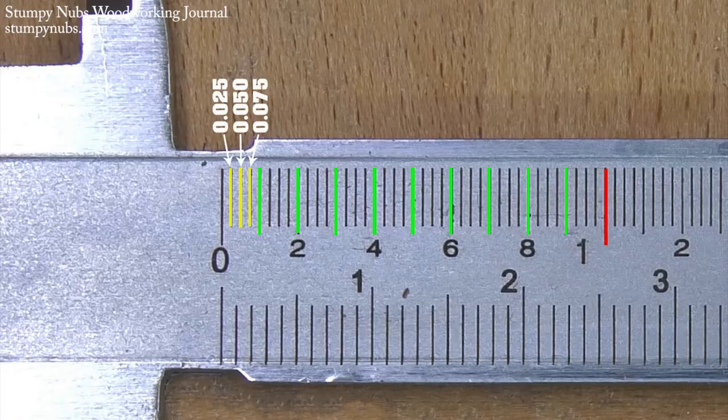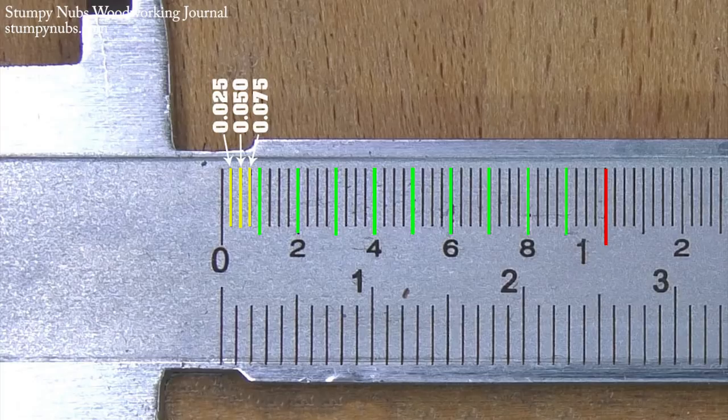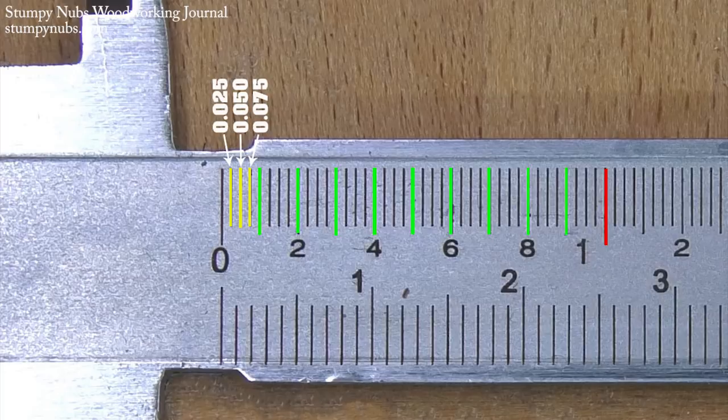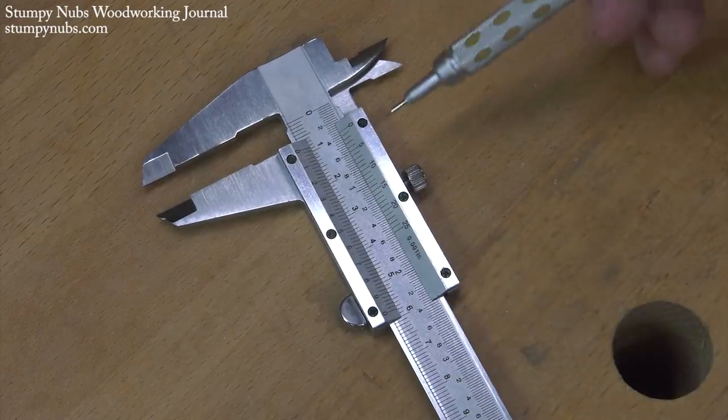Those are each divided into four smaller increments. Point oh two five, point oh five oh, point oh seven five, and so on. But what if you need to get really accurate and divide your increments even further? There isn't room to add more lines between each of those small marks. That's where the Vernier scale comes in.